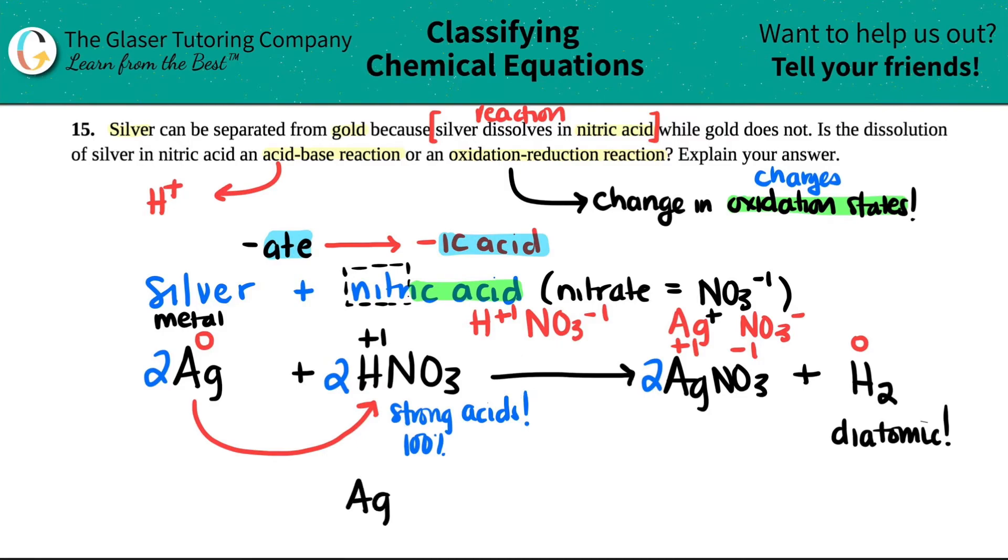For silver, it started off as being zero, and it wound up being a plus one. Hydrogen, on the other hand, started off as being a plus one, and it went to being a zero. Anytime that you have a change in your oxidation states, you have an oxidation reduction reaction. This was not an acid-base reaction. This is fully an oxidation reduction reaction.